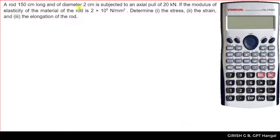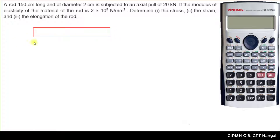A rod 150 cm long and of diameter 2 cm is subjected to an axial pull of 20 kN. So, the length is 150 cm, the diameter d is 2 cm, and the axial pull is 20 kN in this direction.